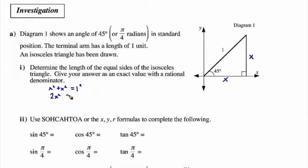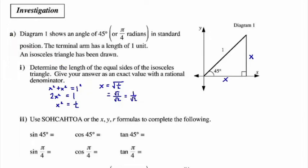That's a squared plus b squared equals c squared from the Pythagorean theorem. This gives us 2x squared equal to 1, so x squared equals 1 over 2. Taking the square root of both sides, x is going to be the square root of 1 over 2, which is 1 over the square root of 2. We rationalize the denominator by multiplying by root 2 over root 2, and we get root 2 over 2. So the length of x is root 2 over 2.